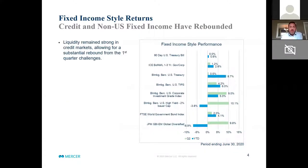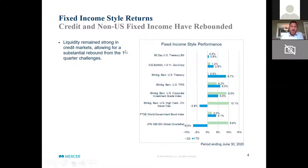Fixed income markets also saw a similar degree of rebound as equity markets. Credit rebounded significantly and liquidity remains strong. There were substantial challenges at the end of the first quarter, but action by governments and central banks really helped to calm fixed income markets, keep them functioning, and make liquidity available. They responded with unprecedented levels of stimulus. The fiscal stimulus in the US amounted to about 10 percent of GDP, which really helped to keep this as a deep recession rather than turning into a financial crisis.